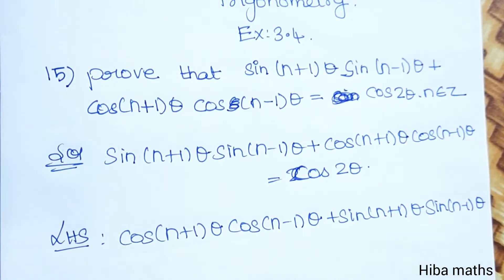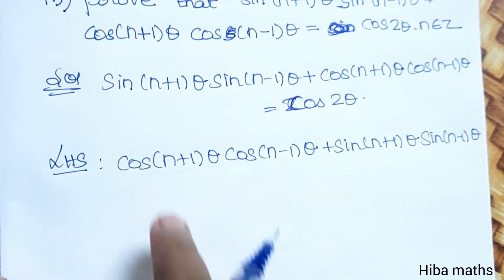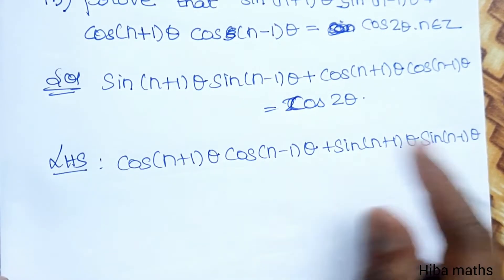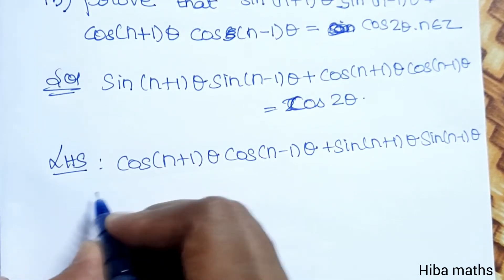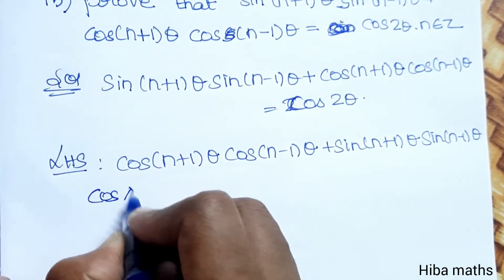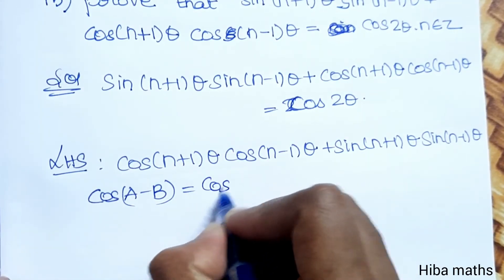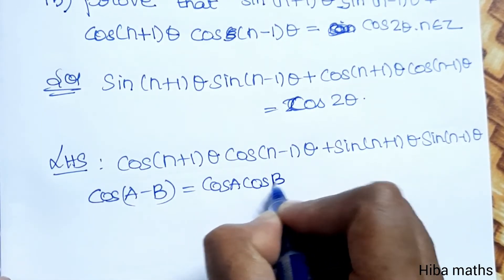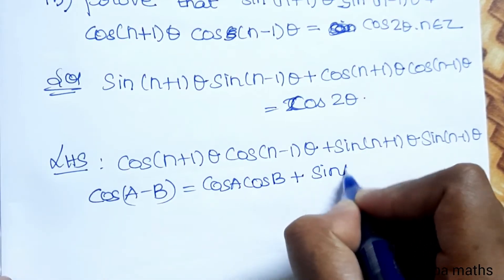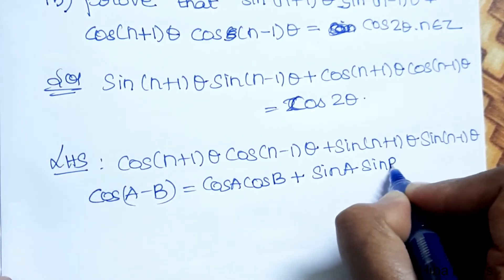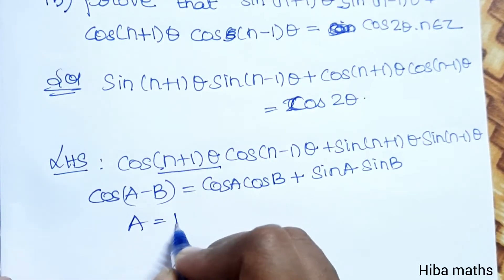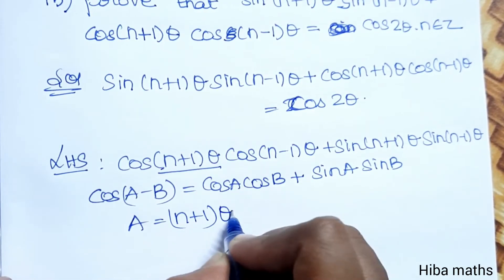It is in the format cos A cos B plus sin A sin B. This is the expansion of the cos(A-B) formula.